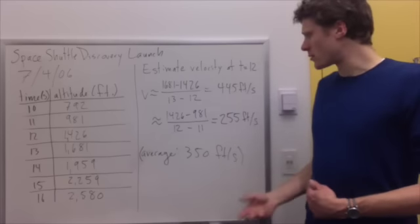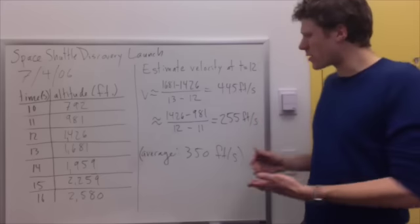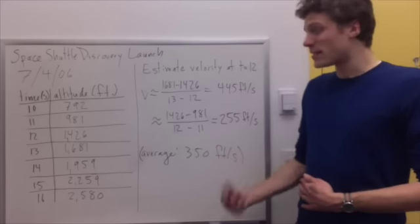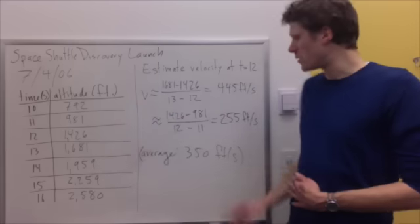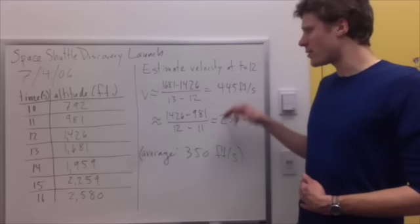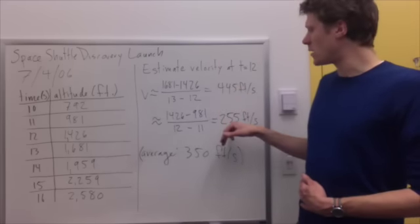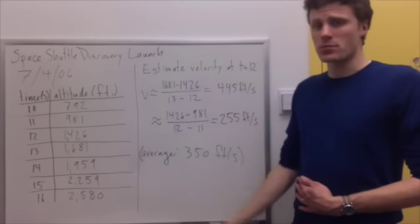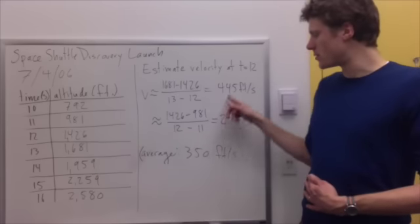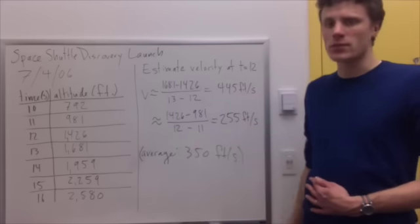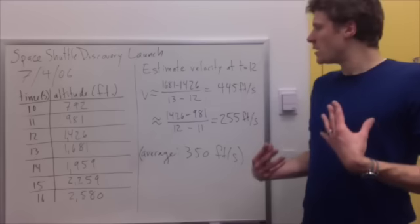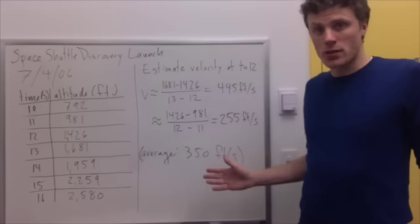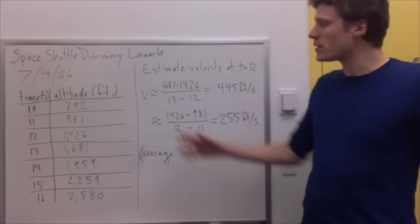Those are two very different numbers, though. So it gives us an estimate, but they're kind of far away from each other, which suggests that the actual instantaneous velocity at time t equal to 12 is neither of these numbers. Something happened between 11 seconds and 13 seconds. If we want to get a better estimate, it probably makes sense to take the average of these two values. So if we add them together and divide, we get 350.